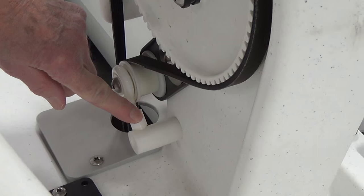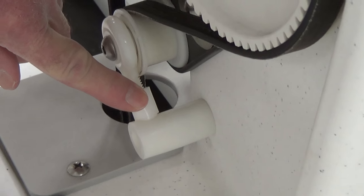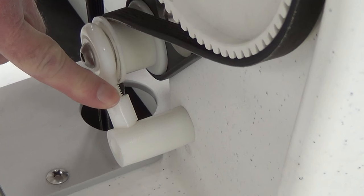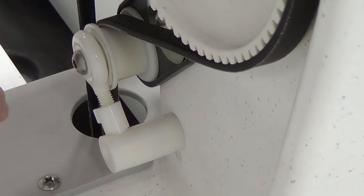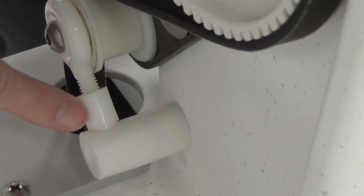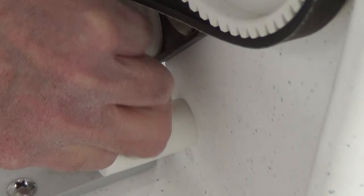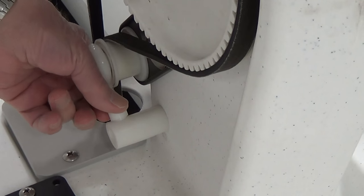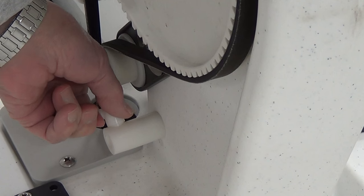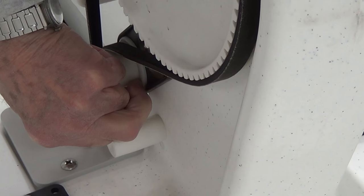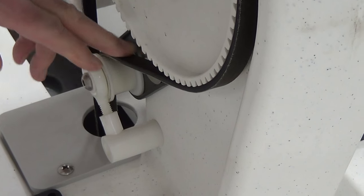There's a tensioning assembly right in this area right here in which you do it, and it is this piece right here which we call an elongated nut. You just turn that, turn it clockwise to tension the belt more and turn it counterclockwise to tension it less.